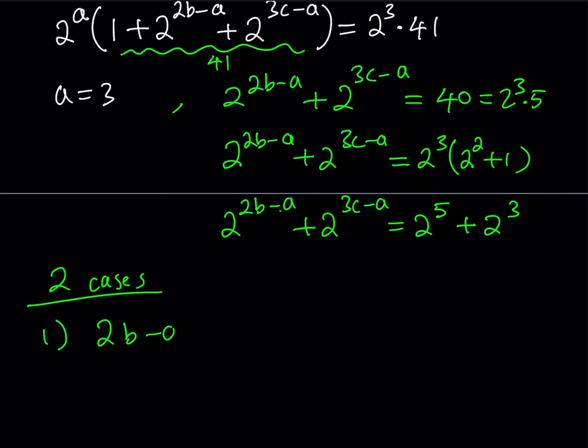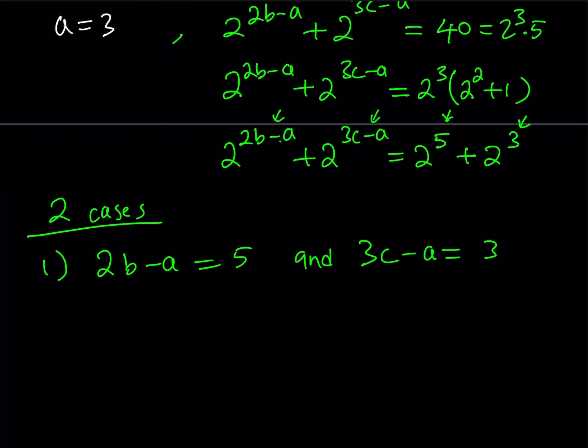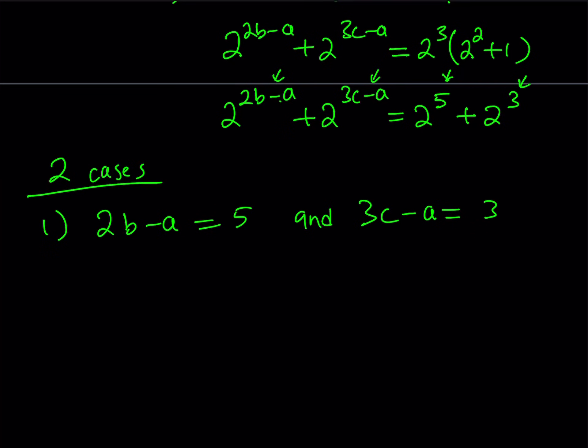Or you can just argue that, is there going to be a possible value of a? Probably not. Anyway, let's continue. So from here, we get two cases. What are those cases? Well, first case is, 2b minus a can equal 5, and the other one can equal 3, or vice versa. Let's take a look at each case.